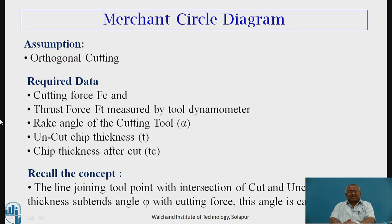For drawing this diagram, the first and basic assumption is that our metal cutting is orthogonal cutting. Orthogonal cutting is two-dimensional cutting, strictly confined to two dimensions. The required data is: we have to measure cutting force, denoted by Fc, which acts in the direction of tool travel, and thrust force, denoted by Ft, which acts perpendicular to the cutting force. These two forces are measured by a tool dynamometer during the metal cutting operation.